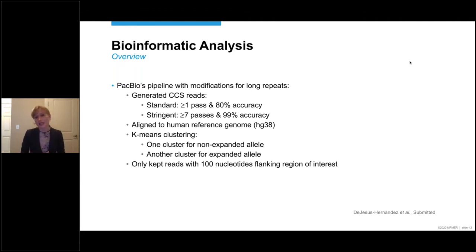We then aligned the data to the human reference genome, HG38. And we used K-means clustering to differentiate between the expanded allele and the non-expanded allele, the wild-type allele. And we made sure that we only kept reads with 100 flanking nucleotides, therefore ensuring that we captured the entire expansion and not just a part of it.